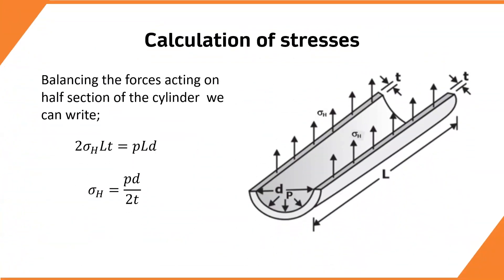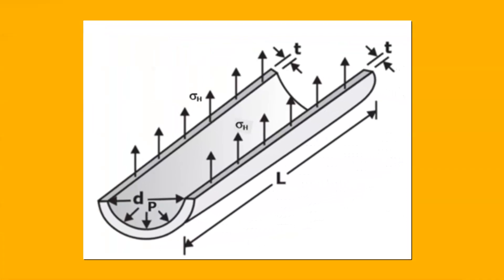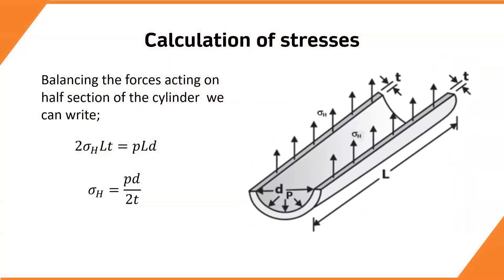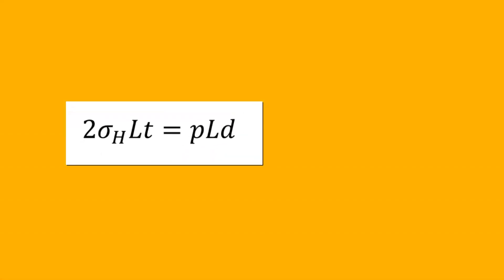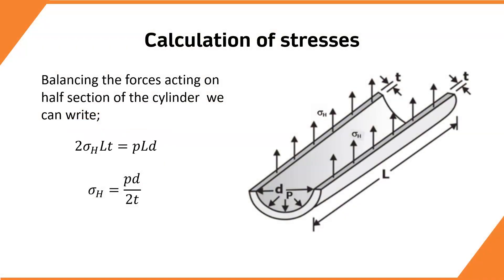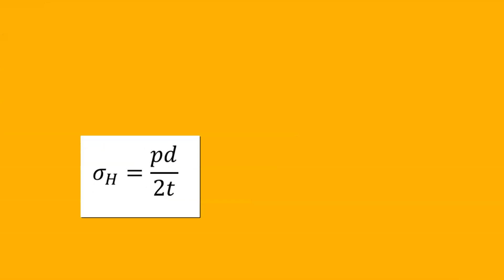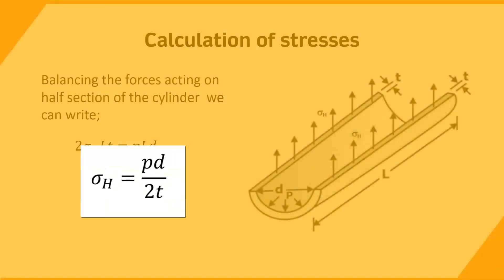Let us see how to calculate the stresses. Look at the diagram that shows a longitudinally cut half cylinder. Balancing the forces acting on the half section of the cylinder, we can write: 2 × σH × L × T = P × L × D. This is simplified to σH = PD / 2T.